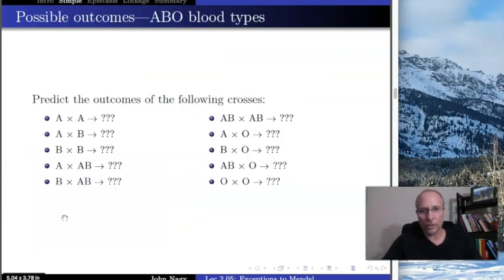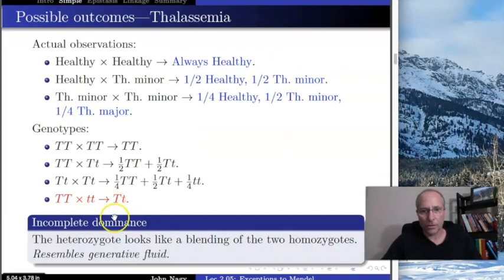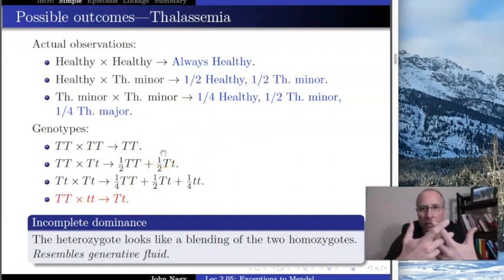We've now seen two different violations of Mendel's principle: this one, codominance, and this one, incomplete dominance. How do you keep them apart? Here's the point. If they blend, then we're looking at incomplete dominance. If they're both there, then we're looking at codominance.